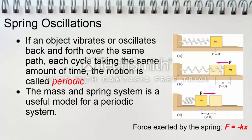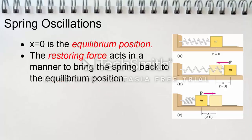The negative sign on the force indicates that it is a restoring force, which means it is directed to restore the mass to its equilibrium position. Here you see that the box is at x equals zero, which represents the equilibrium position. The restoring force acts in such a way to bring the spring back to the equilibrium position.